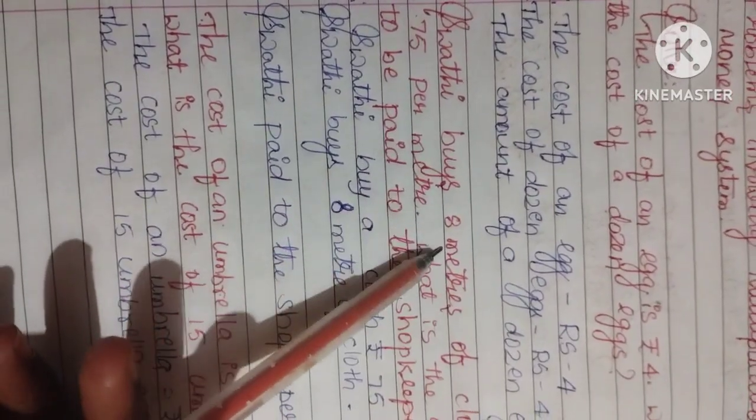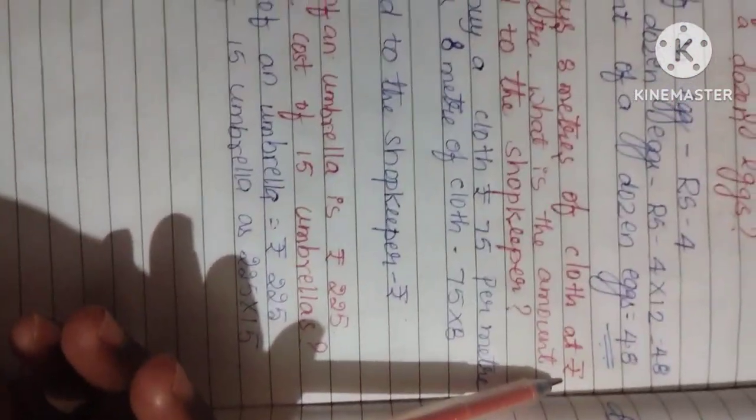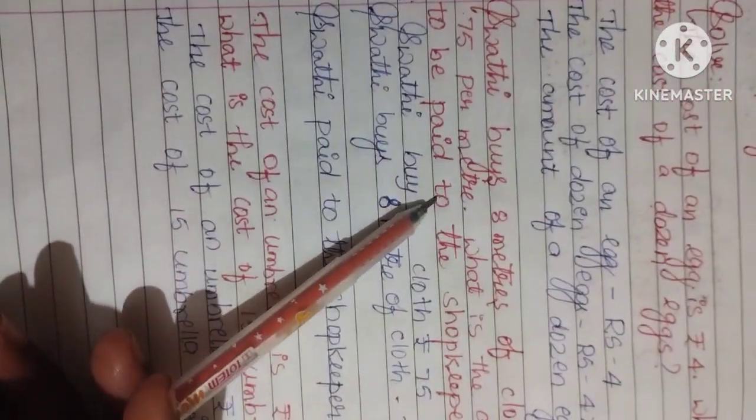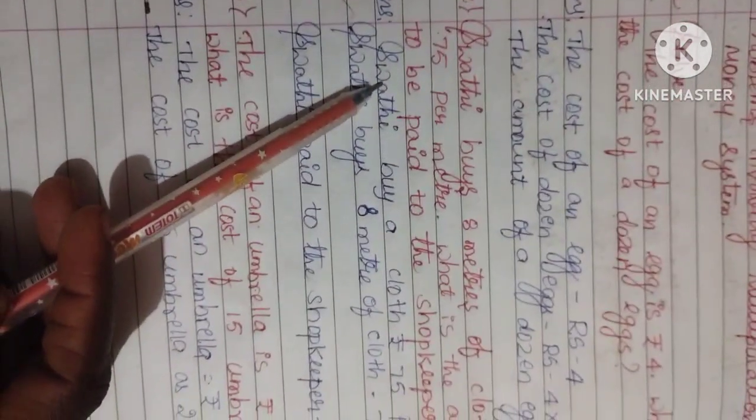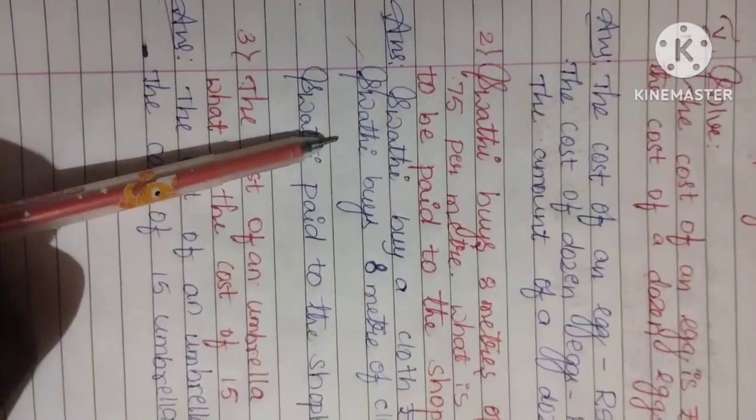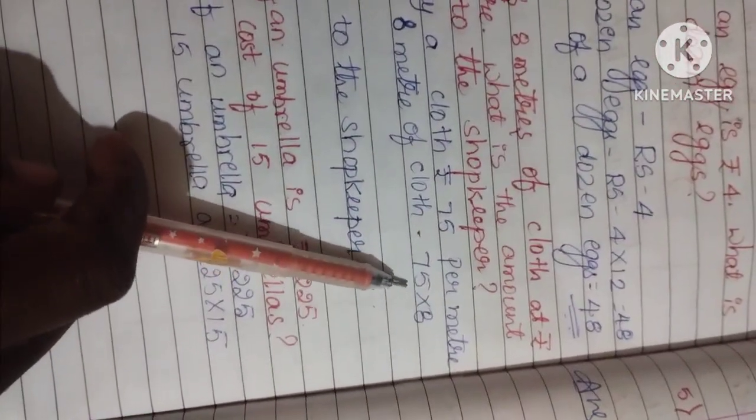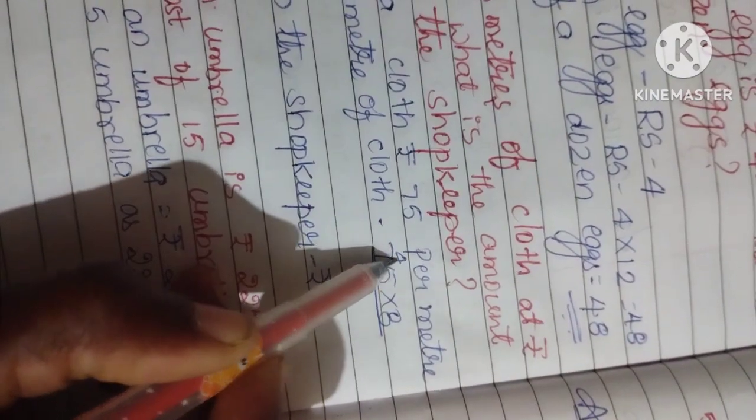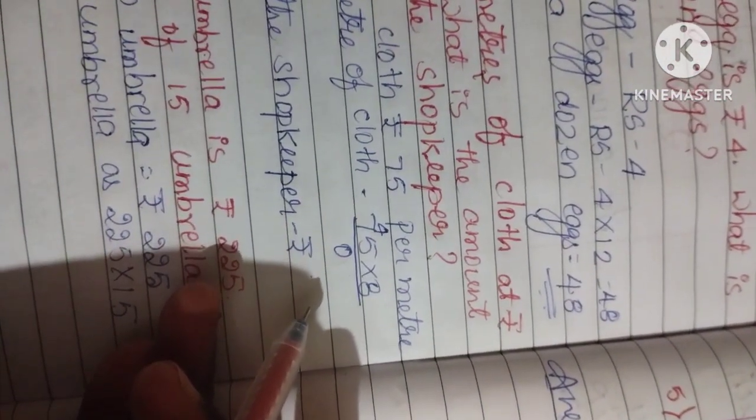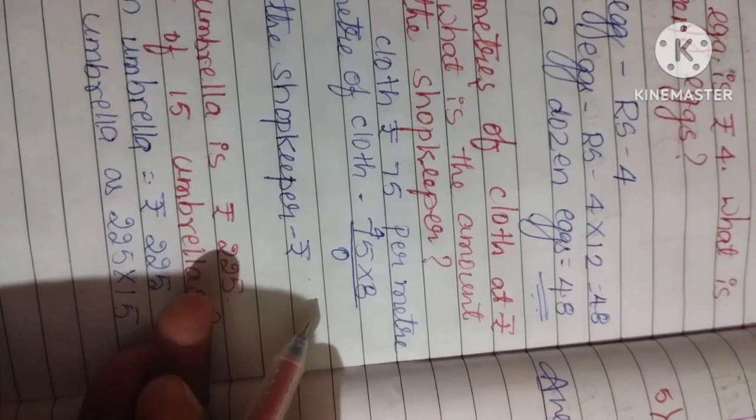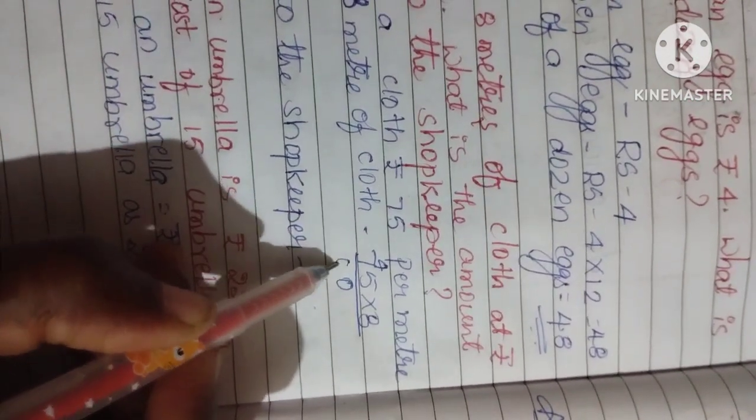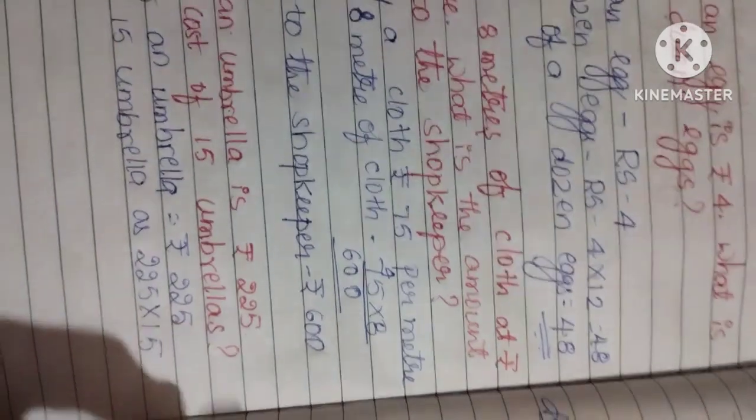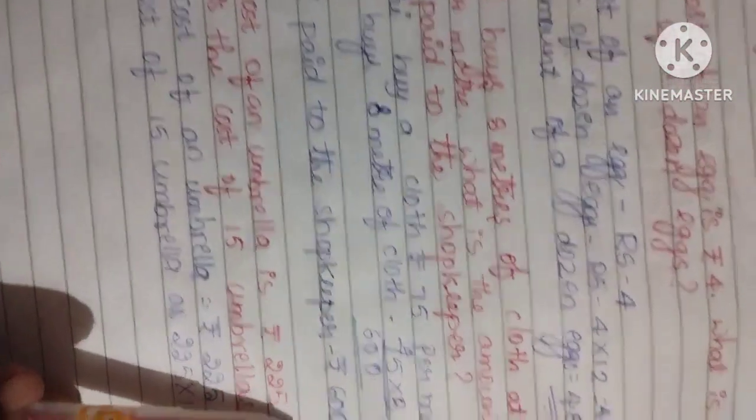Next, the second question. Swati buys 8 meters of cloth at 75 rupees per meter. What is the amount to be paid to the shopkeeper? Swati buys 8 meters at 75 rupees per meter, so we calculate 75 into 8. Eight times 5 is 40, 4 carries. Eight times 7 is 56 plus 4 equals 60. The answer is 600 rupees. Swati pays the shopkeeper 600 rupees.